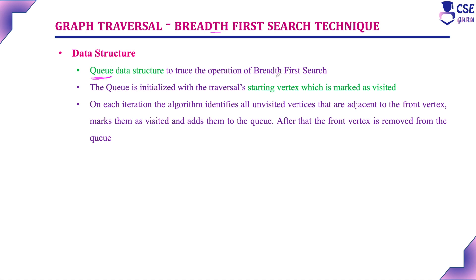The Queue data structure is used to trace the operation of Breadth First Search. The Queue will be initialized with the traversal starting vertex, which is marked as visited first. On each iteration, the algorithm identifies all the unvisited vertices adjacent to the front vertex — the source vertex — marks them as visited, and adds them to the Queue. Once all adjacent unvisited vertices are included in the Queue, the front vertex is removed. The data structure used in Breadth First Search is the Queue.